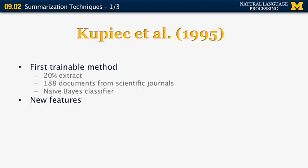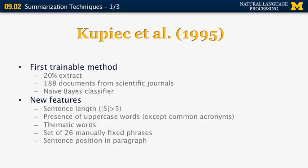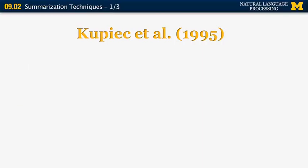The features used include sentence length — sentences with fewer than five words are not included — the presence of uppercase words such as names of places, organizations, and people except for common acronyms, the use of thematic words, and a set of 26 manually fixed phrases. The sentence position in the paragraph is also a numeric feature from 1 to n, where n is the number of sentences in the paragraph.